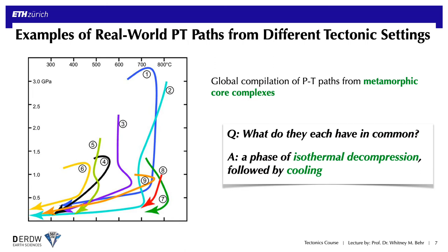Coming back to the larger scale of using PT paths to understand tectonics: by assembling many of these pressure-temperature paths from throughout the world for specific tectonic settings, we start to see some diagnostic patterns showing up. This is a global compilation of pressure-temperature paths from metamorphic core complexes, which are regions of large-scale continental extension — we'll talk about these in detail in a couple of weeks. Although these core complexes span a wide range of peak temperatures, what nearly all of them have in common is a phase of isothermal decompression or even slight warming associated with their exhumation path, telling us something fundamental about the tectonic process that allowed these rocks to return to the surface.